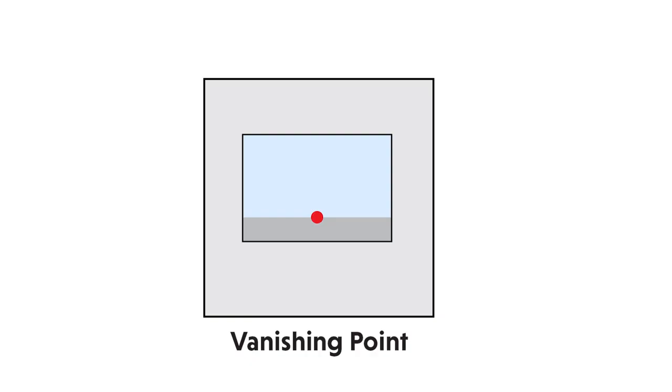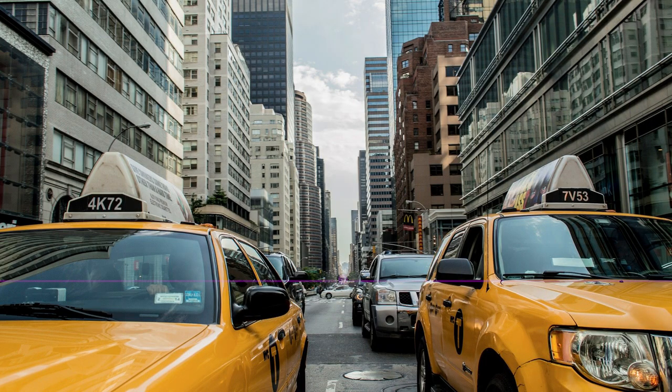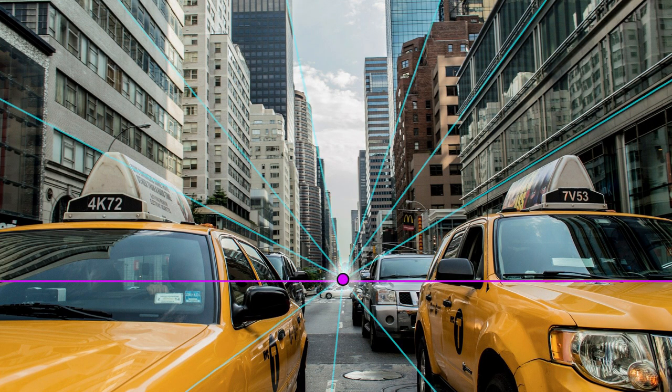Then we have the vanishing point. This is a point we place on the horizon line where everything within the image converges towards that point.